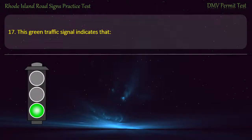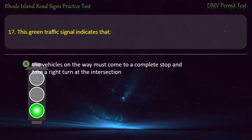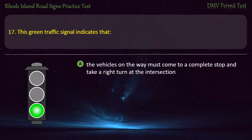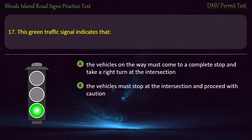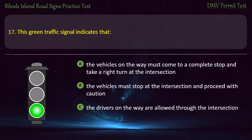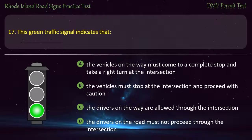Question 17. This green traffic signal indicates that: the vehicles on the way must come to a complete stop and take a right turn at the intersection; the vehicles must stop at the intersection and proceed with caution; the drivers on the way are allowed through the intersection; the drivers on the road must not proceed through the intersection. Answer: The drivers on the way are allowed through the intersection.